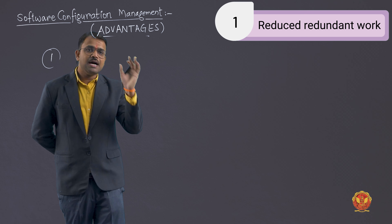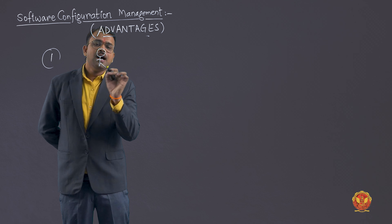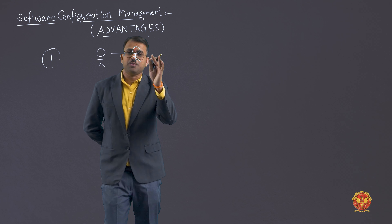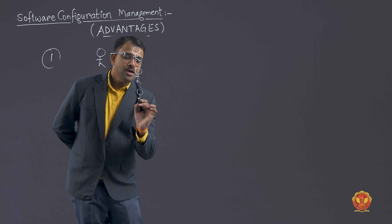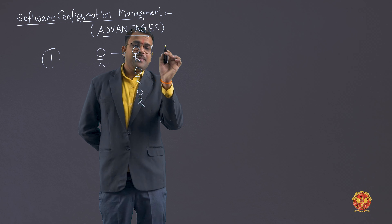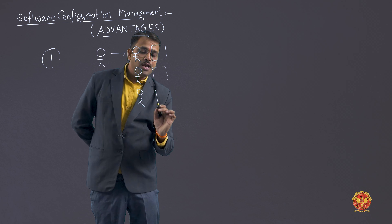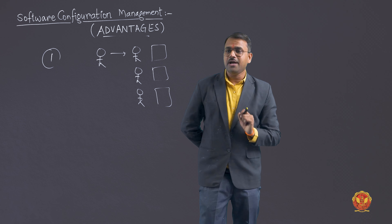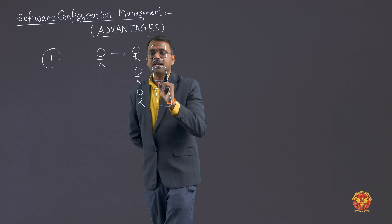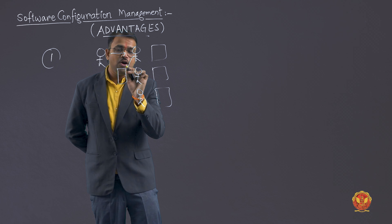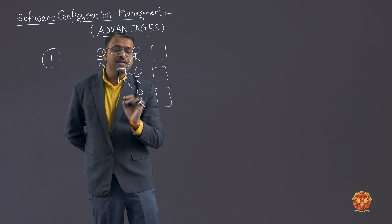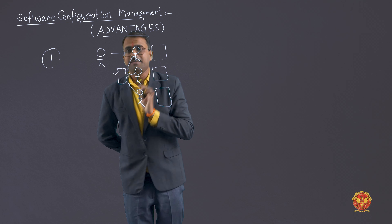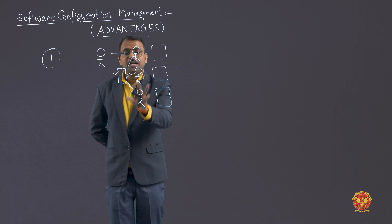Reduce redundant work means we don't have to do the same task repeatedly. Suppose your faculty asked you to make a report for your project, and there are five friends in your group. So instead of all five making separate files, you create one particular file and update it together, dividing tasks among yourselves — who will do what.